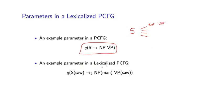We have parameters in lexicalized PCFGs which again are associated with entire rules. Here's an example parameter, and now this parameter is for the rule S-saw goes to NP-man VP-saw.